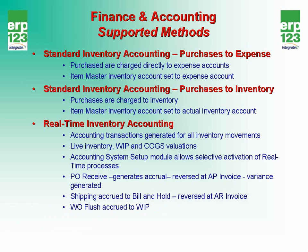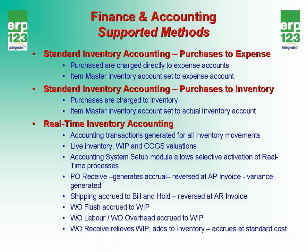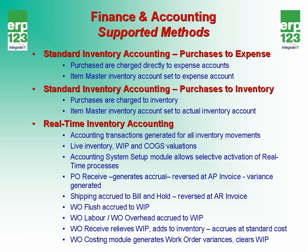Work order flushing transactions, which are materials going into work orders, can be accrued to work in process. Work order labor and work order overhead can also be accrued to work in process. Work order receive transactions relieve work in process and add to inventory. This is typically done at standard cost — the accrual value will be done at standard cost for the particular item, because work orders cannot be properly evaluated until the work order closes. The work order costing module will then generate work order variances and clear work in process once the work order closes.